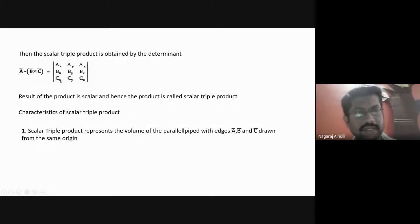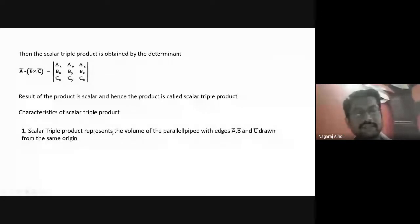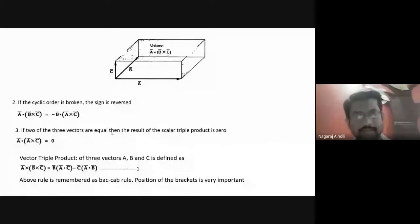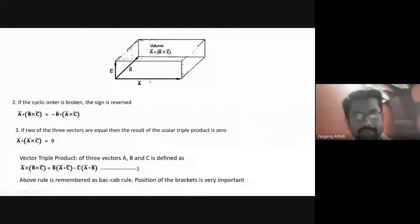We will see some characteristics or properties and applications of the scalar triple product. It gives the volume of the parallelepiped. If a bar, b bar, and c bar are the edges of the parallelepiped all starting at the same origin, then the volume is given by the scalar triple product, that is a bar dot of (b bar cross c bar). This gives the volume of the parallelepiped.